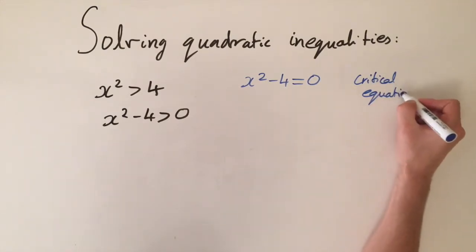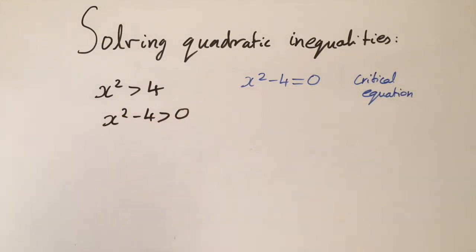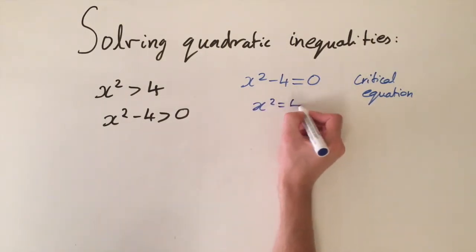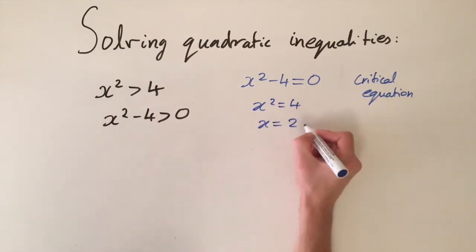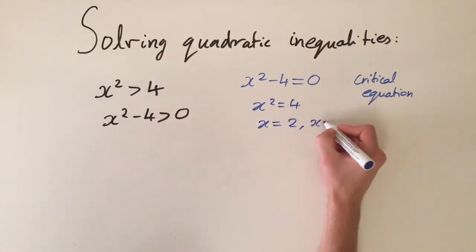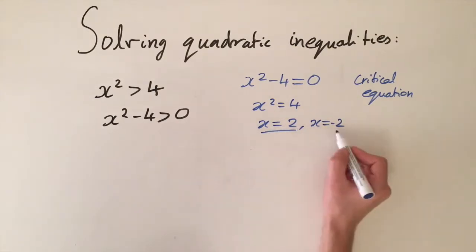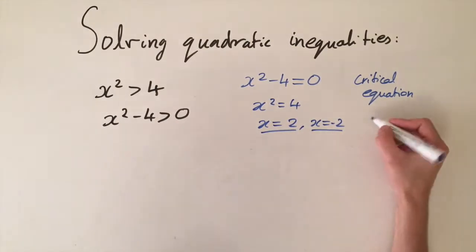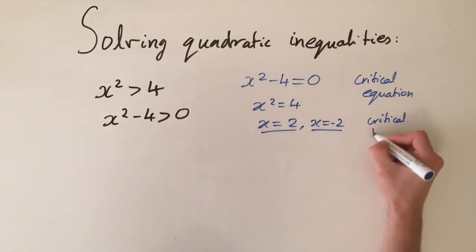This is going to give us some information about what the solutions are going to look like. If we just solve this, we get x squared is equal to four, and taking the square root, we have x is equal to two and x is equal to minus two. These solutions, x equals two and x equals minus two, are called the critical values.